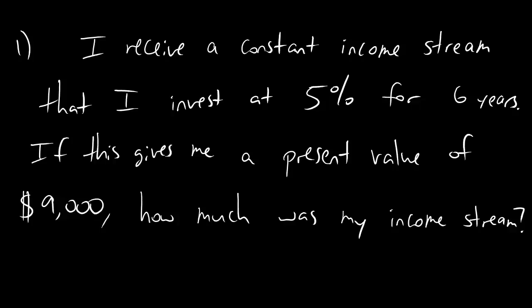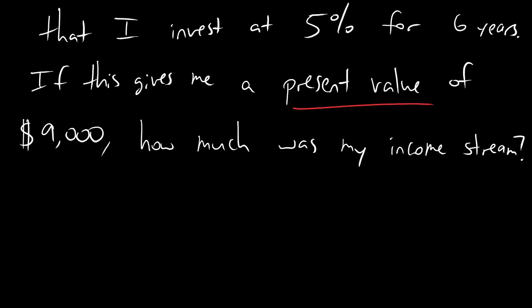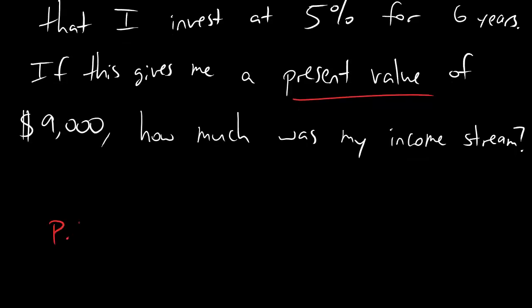Alright, now dudes, the two keywords here are income stream and present value. So what you should do immediately, based on reading this question, is just write down the formula for the present value of an income stream. And it looks like this: Present value equals integral 0 to m, the income stream, times e to the minus rt dt.